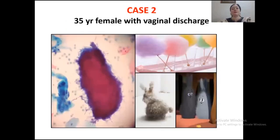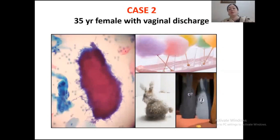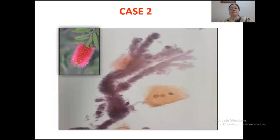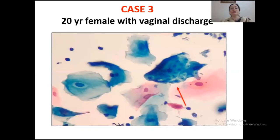Case two was a 35-year-old female with vaginal discharge. The organ shown on the left side of the picture has resemblance to all three pictures shown on the right side. This is another picture of the same case, and the organ has some resemblance to the picture shown in the left side of the inset.